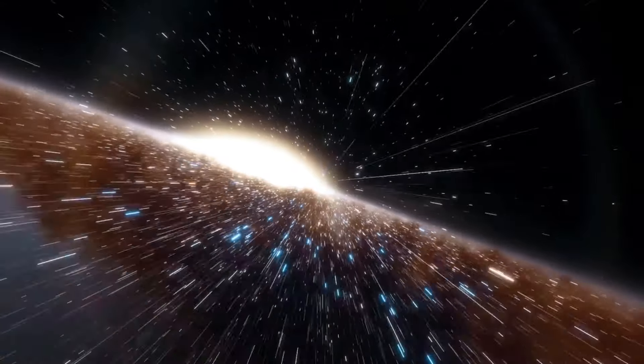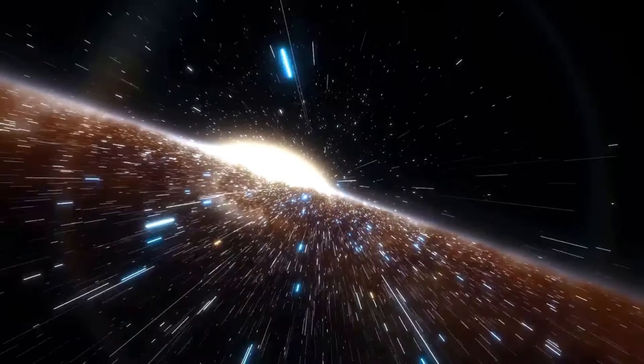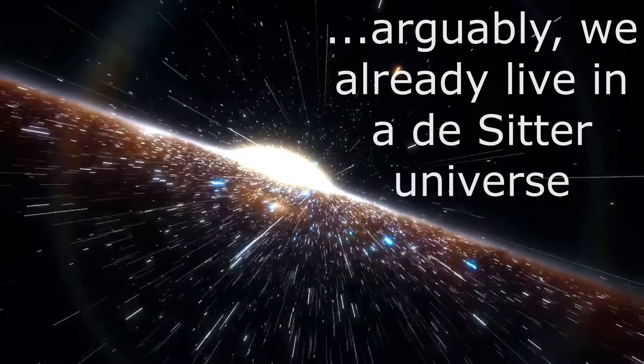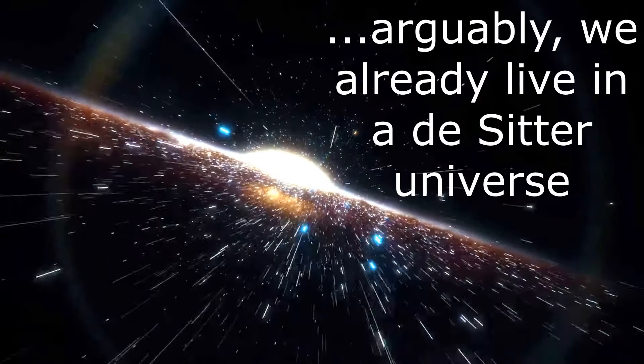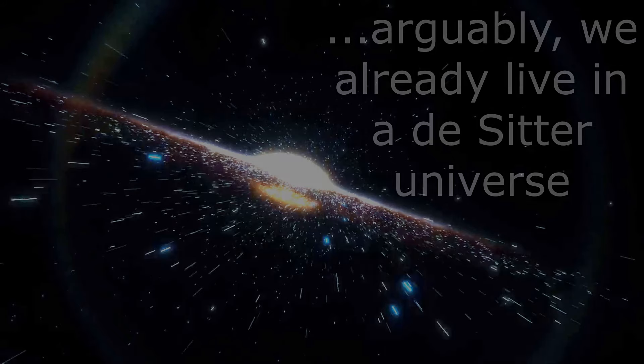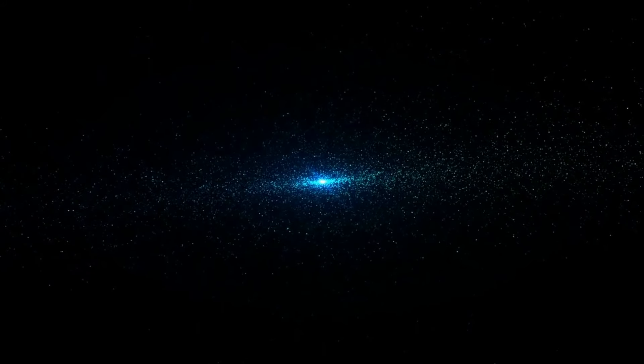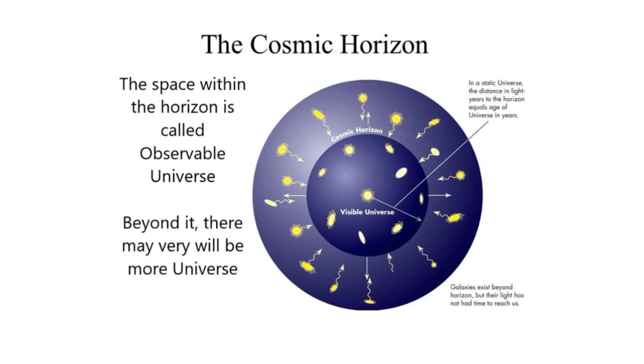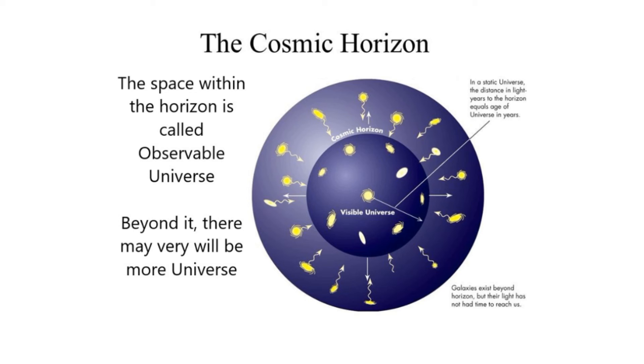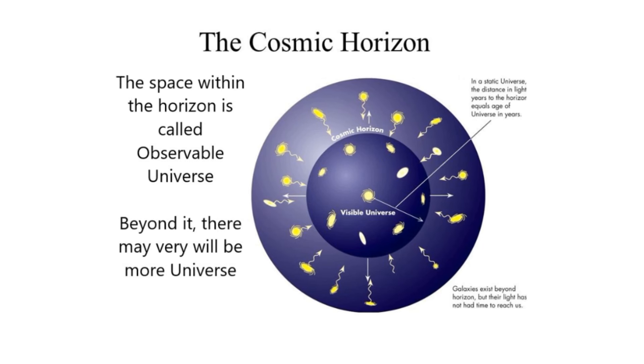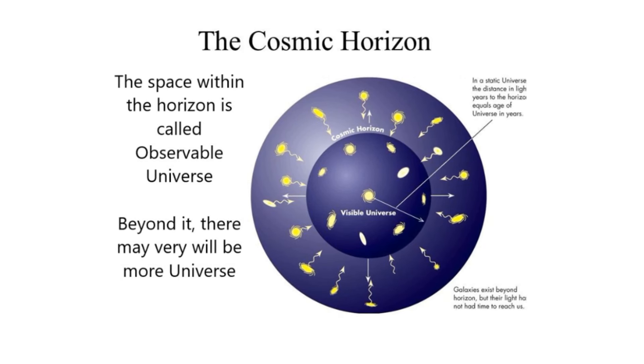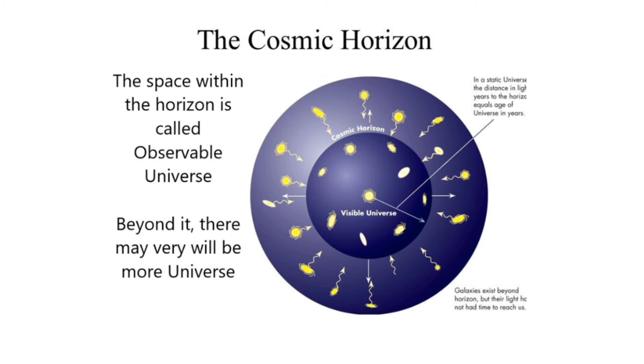De Sitter space is an open-like universe that expands forever. It is what our universe is believed to be in the far future. An indication of the distance from which information might be retrieved is called a cosmological horizon. The expanding universe and different aspects of general relativity and the physics of Big Bang cosmology all contribute to this observable restriction.